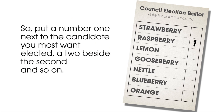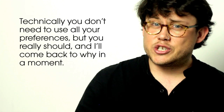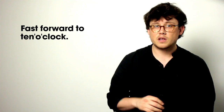You put a number one next to the candidate you most want elected, and a two beside the second, and so on. Technically, you don't need to use all your preferences, but you really should, and I'll come back to why in a moment.